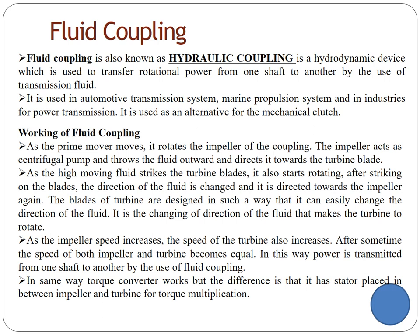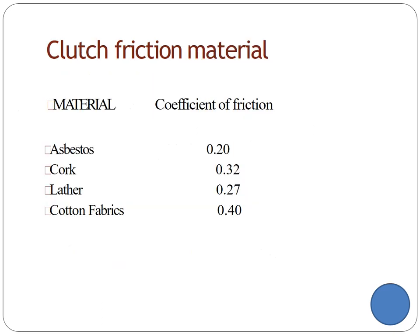Fluid coupling, also known as hydraulic coupling, is a hydrodynamic device used to transmit rotational power from one shaft to another by means of fluid. Clutch frictional materials: asbestos has a coefficient of friction of 0.2, cork 0.32, leather 0.27, and cotton fabric 0.40. These are the clutch materials used in clutch manufacturing.